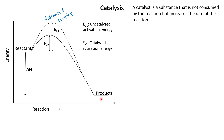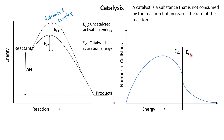Another way to visualize this is to plot energy versus number of collisions. EA1 and EA2 match the previous diagram — uncatalyzed and catalyzed activation energies. Not every collision results in reactants going to products; only collisions with energy beyond EA1 do — shown by the shaded area. Once the reaction is catalyzed, EA2 shifts that threshold back, adding more collisions that result in products. Because a catalyst is not consumed, it can be used over and over again until the reaction is complete.